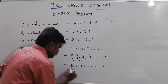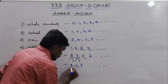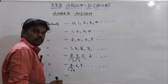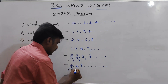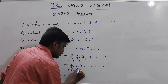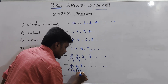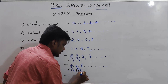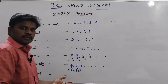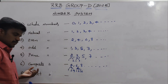Composite numbers have more than 2 multiples — compulsorily 3 or more multiples. For example, 4 has multiples 1, 2, and 4. And 6 has multiples 1, 2, 3, and 6. Those numbers with 3 or more multiples are called composite numbers.